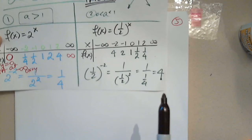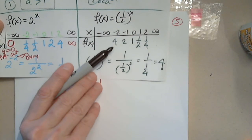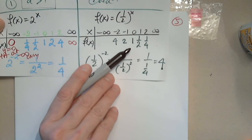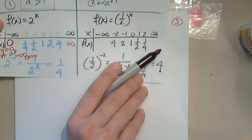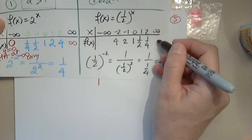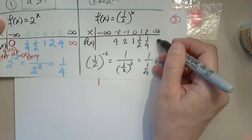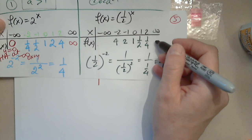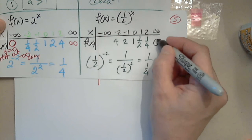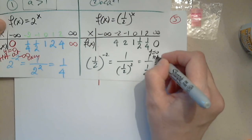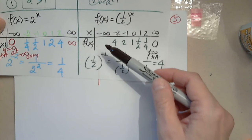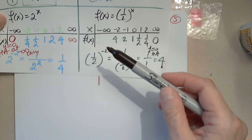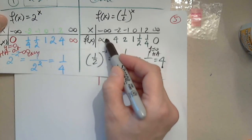Let's identify the end behavior. Going to the right: 4, 2, 1, 1/2, 1/4, 1/8 — a cake divided by a million people — approaching zero. Y = 0 is a horizontal asymptote at positive infinity. Going left: 1, 2, 4, 8, 16, 32, 64, 128, 10 million — positive infinity.